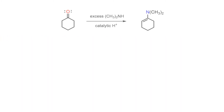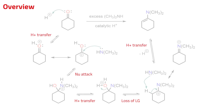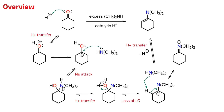Aldehydes and ketones react with secondary amines in the presence of acid to form enamines. The reaction is catalytic in acid and diverges from imine formation in the final part of the mechanistic pathway. The mechanism involves activation of the carbonyl with acid, trapping of the intermediate with the amine, and subsequent loss of a water-leaving group to give a second resonance-stabilized carbocation. This species loses a proton from the beta-carbon to give the enamine product. The overall process is catalytic in acid and completely reversible.